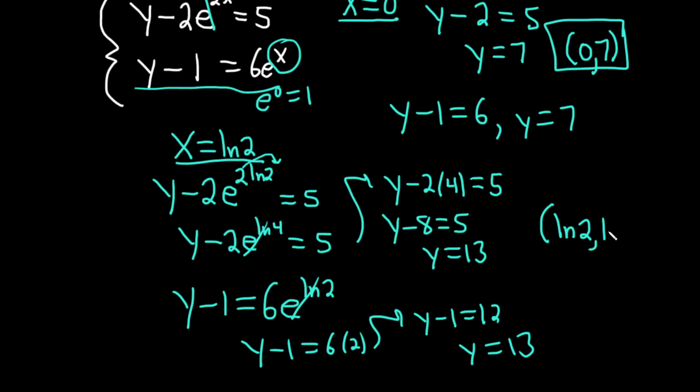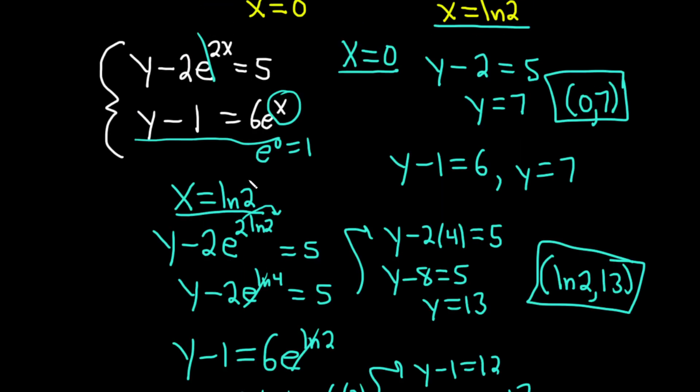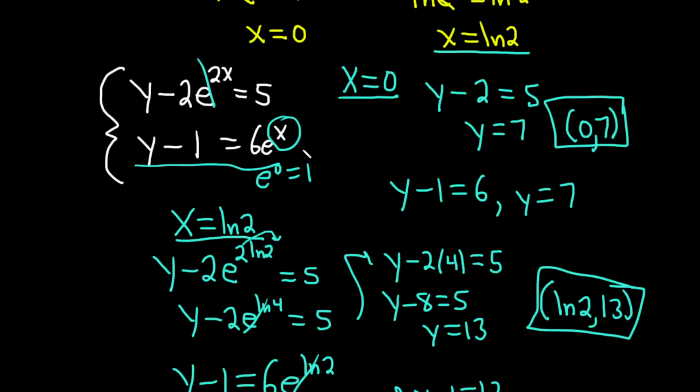So the other ordered pair that is a solution to this system of equations is the ordered pair whose components are natural log of 2 and 13. So these would be the two points of intersection that you would get in the x-y plane. So if you were to graph both of these exponential functions, this is where the functions actually intersect. Kind of an interesting problem. I hope this video has been helpful to someone out there. Good luck.